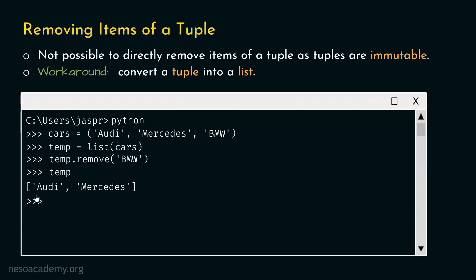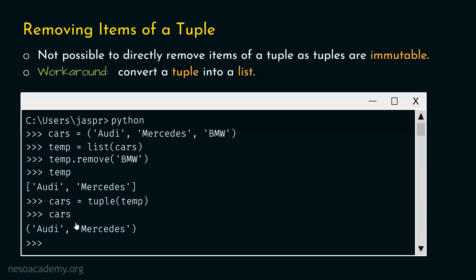Now we need to convert this list to a tuple. For this, we will type: cars = tuple(temp). Let's hit enter and type cars. We are getting this tuple with two items: Audi and Mercedes. We have successfully removed BMW from this tuple.